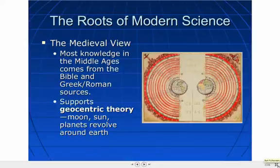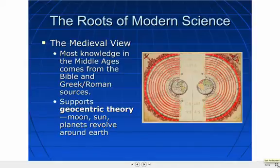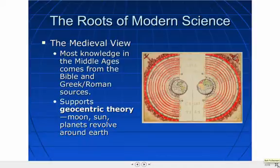One of the first theories that comes out at this time is called the geocentric theory. The geocentric theory is an old theory, and it is proven to be incorrect. It states that the moon, the sun, and all the planets revolve around the earth — think of geography, which relates to earth, meaning the earth is the center. This is what people believed during medieval times and the beginning of the Renaissance.